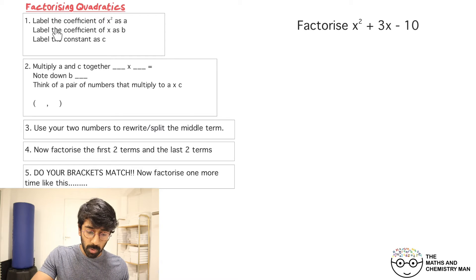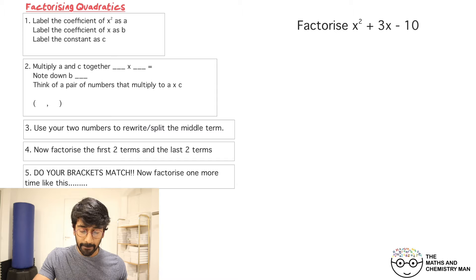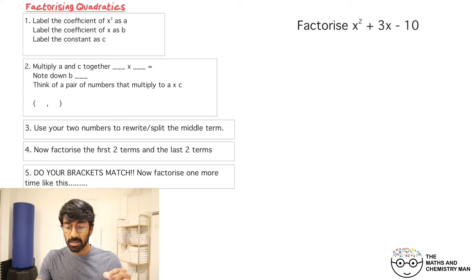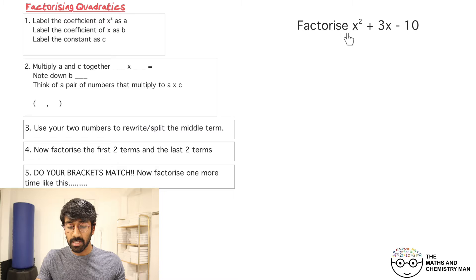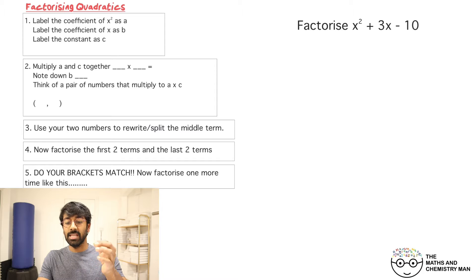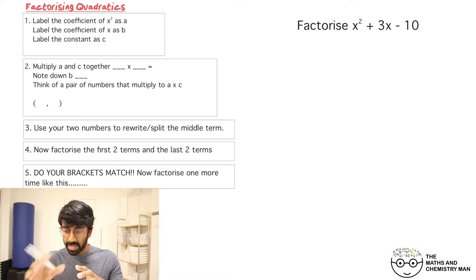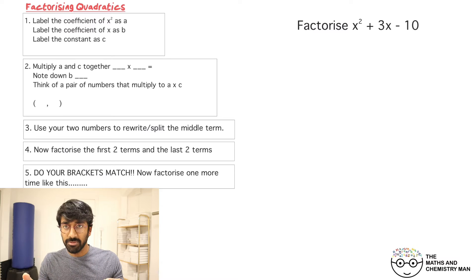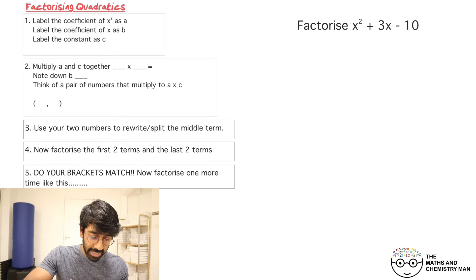Step number one: label the coefficient of x squared as a. Coefficient just means the number in front of the x squared. So the coefficient of x squared — you look over there and you might think there's no number, but when you see just a letter like x, there is a hidden number in front of it: there's a number one.